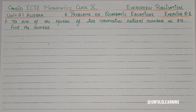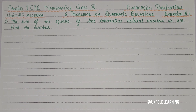Hello everyone, welcome back to my YouTube channel Unfold Learning. Today I am going to take a solution for you from Candid ICSC Mathematics Class 10 from Evergreen Publication, which is in Unit 2 Algebra, Chapter 6, Problems on Quadratic Equations, Exercise 6.1. This exercise is based on word problems. Please do have a look in the description box of this video where you will see the rest of the videos easily.